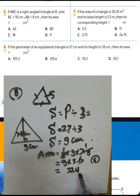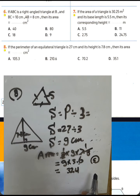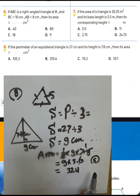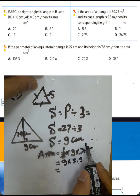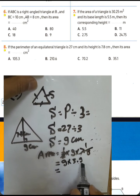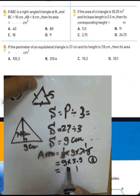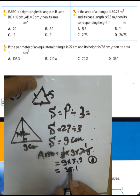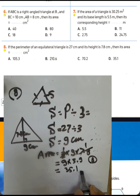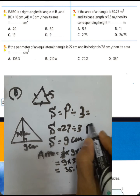Half of 7.8 divided by 2: 7 divided by 2 equals 3 remainder 1, and 18 divided by 2 equals 9, so half of 7.8 equals 3.9. Then 3.9 times 9: 9 times 9 equals 81, carry 8; 3 times 9 equals 27, plus 8 equals 35. The result is 35.1 square centimeters. The answer is letter D for question eight.